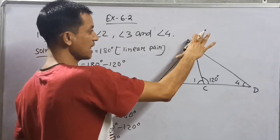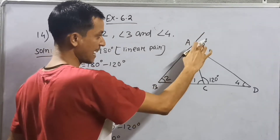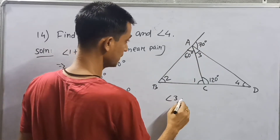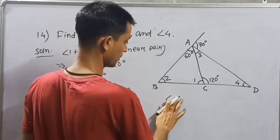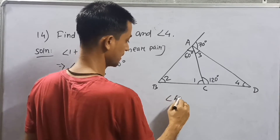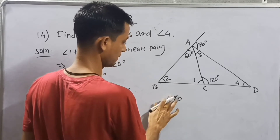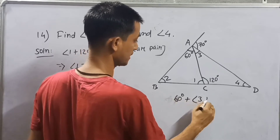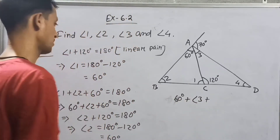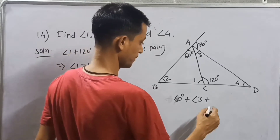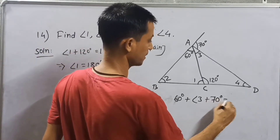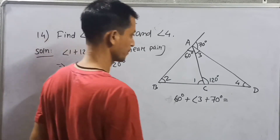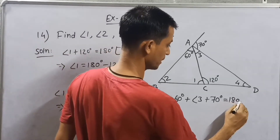Here also, they form a straight angle — that is 180 degrees. So 60 degrees plus Angle 3 plus 70 degrees equals 180 degrees.